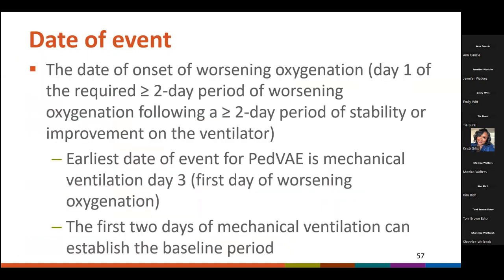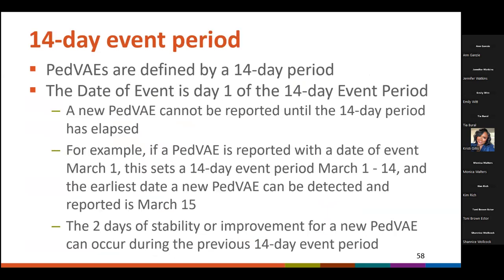Now that we can identify PVAE, the next concept to cover is the date of event for PVAE. The date of event is the date of onset of worsening oxygenation. The earliest date of event for PVAE is mechanical ventilation day three, which is the first day of worsening oxygenation, and the first two days of mechanical ventilation can be used to establish the baseline period. PVAEs are defined by a 14-day period. The date of event is day one of the 14-day event period, and a new PVAE cannot be reported until the 14-day period has elapsed. For example, if a PVAE is reported with date of event March 1st, this sets a 14-day event period of March 1st through 14th, and the earliest date a new PVAE can be detected and reported is March 15th. The two days of stability or improvement for a new PVAE can occur during the previous 14-day event period.